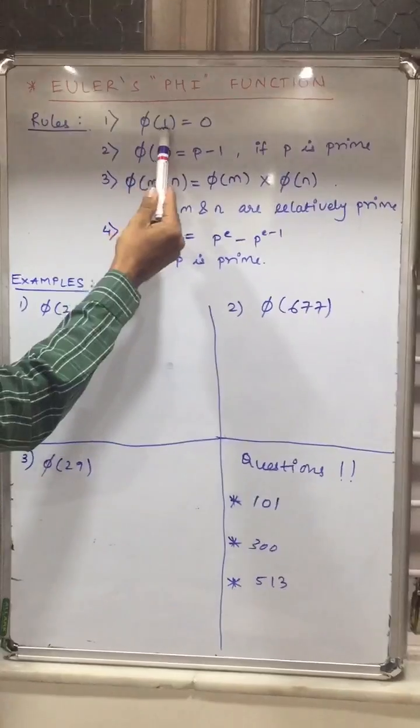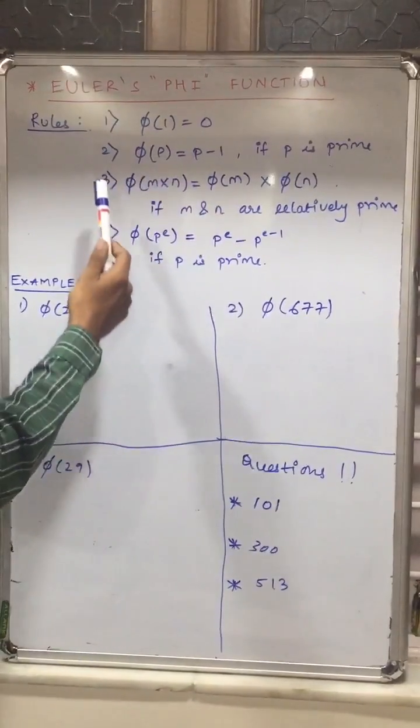I have written the four basic rules of how to find Euler's phi function. First rule: phi of 1 is equal to 0. Second rule: phi of p is equal to p minus 1 if p is prime number.